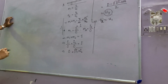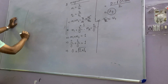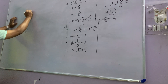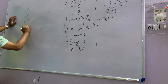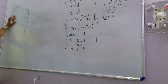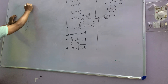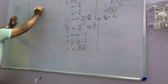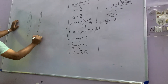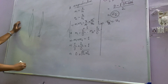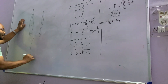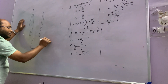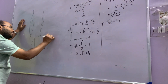If a lens is cut along a longitudinal section, each section has focal length 2F. But if the lens is cut transversely, each section has the same focal length F.